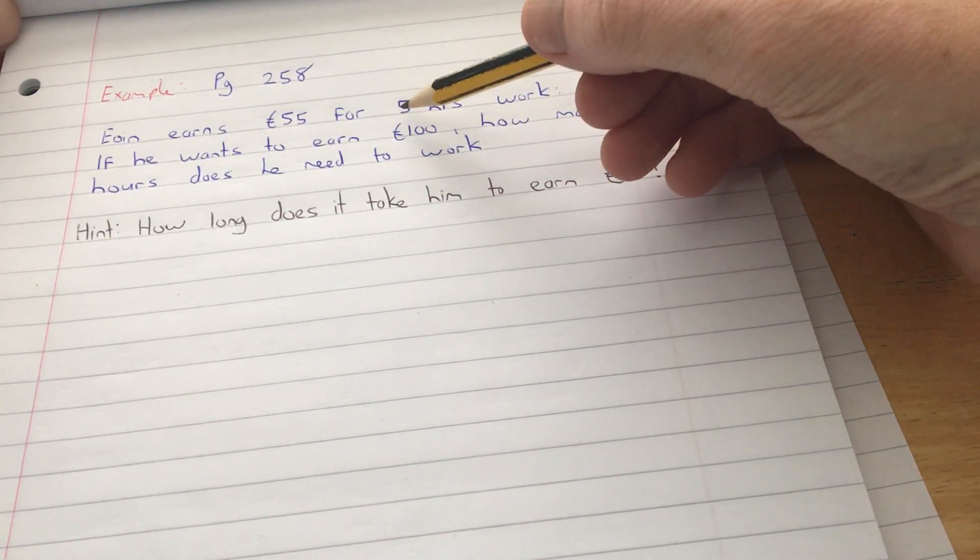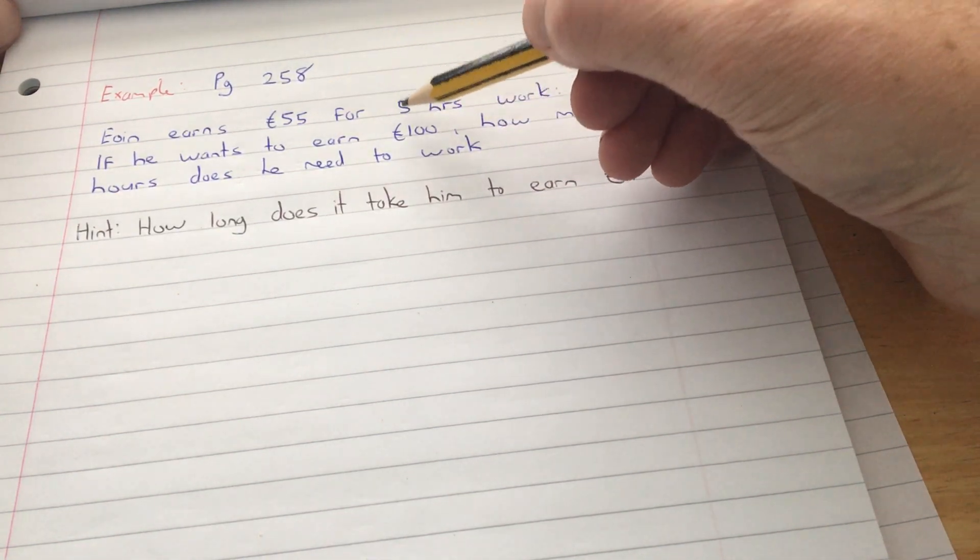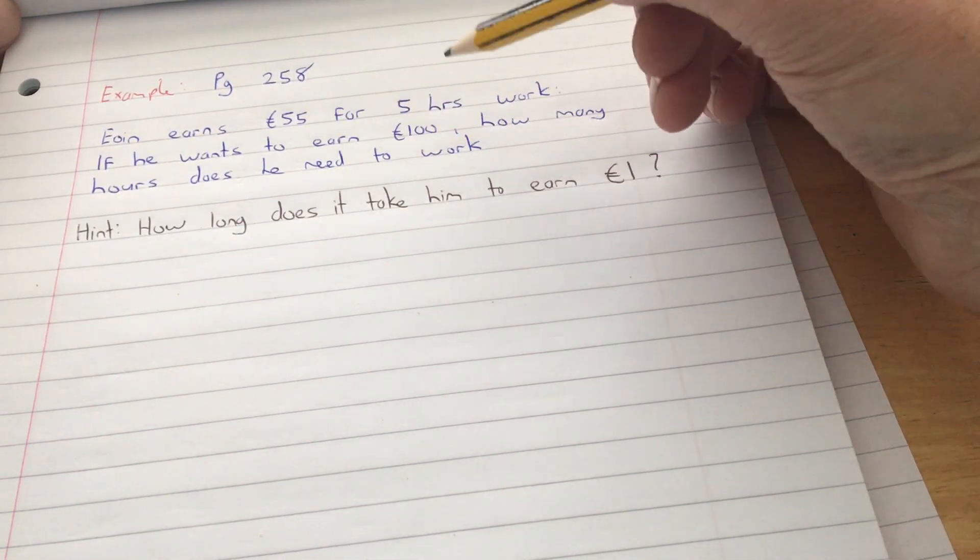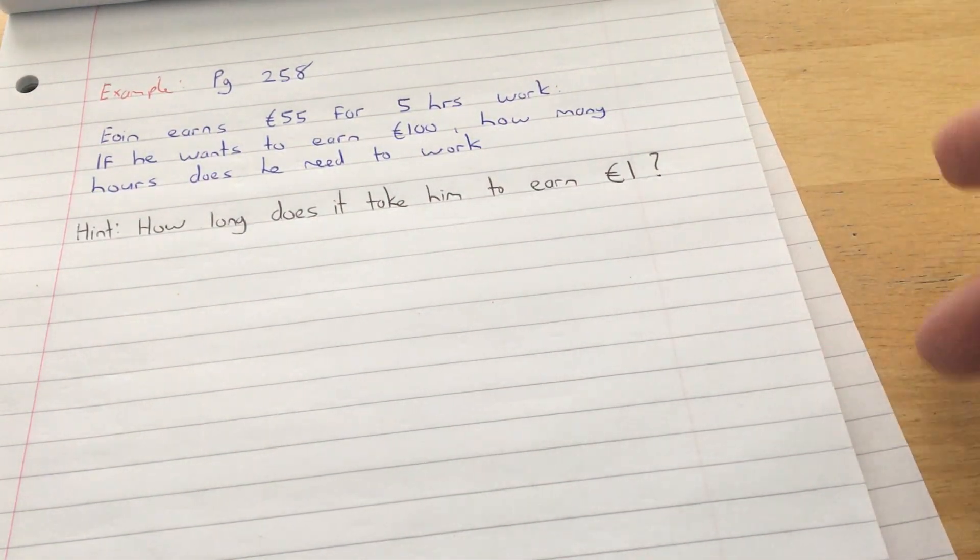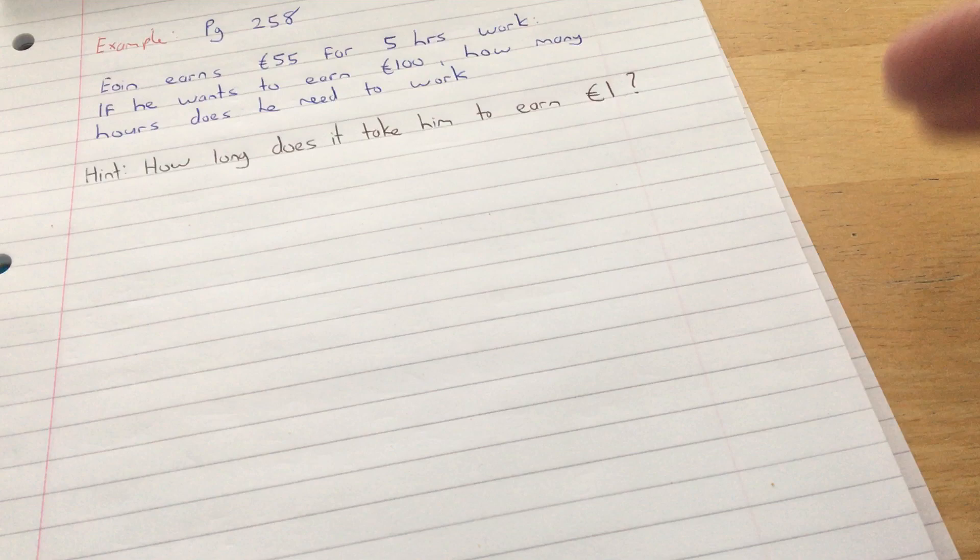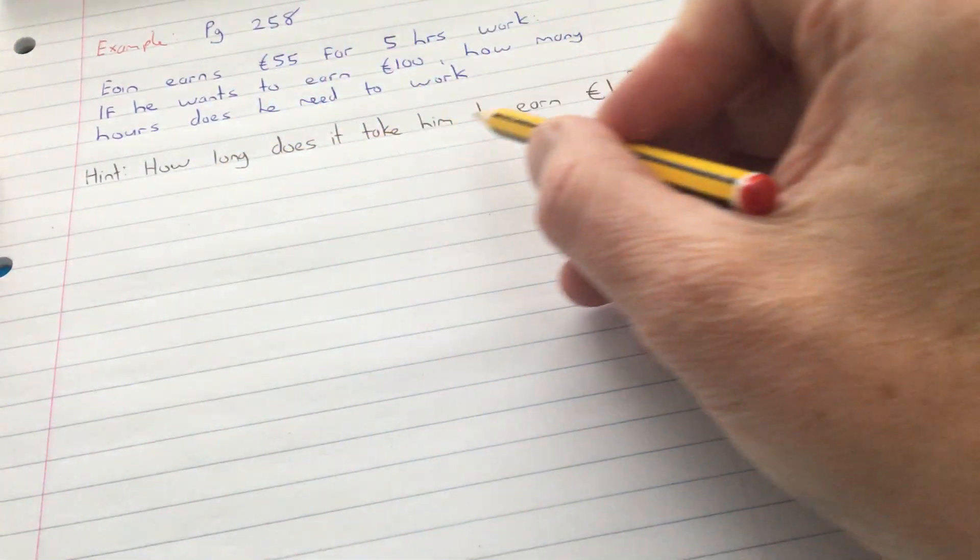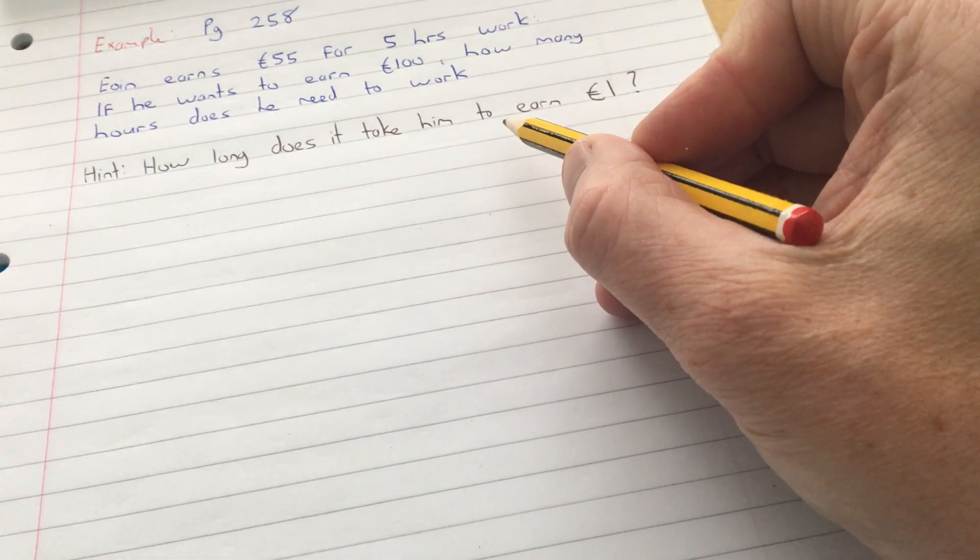If he worked 5 hours and gets 55, if he works 10 hours he gets 110, but it's not that easy to find out how much less than 10 hours he needs to work. The best way of doing this is to ask: how long does it take him to earn 1 euro?